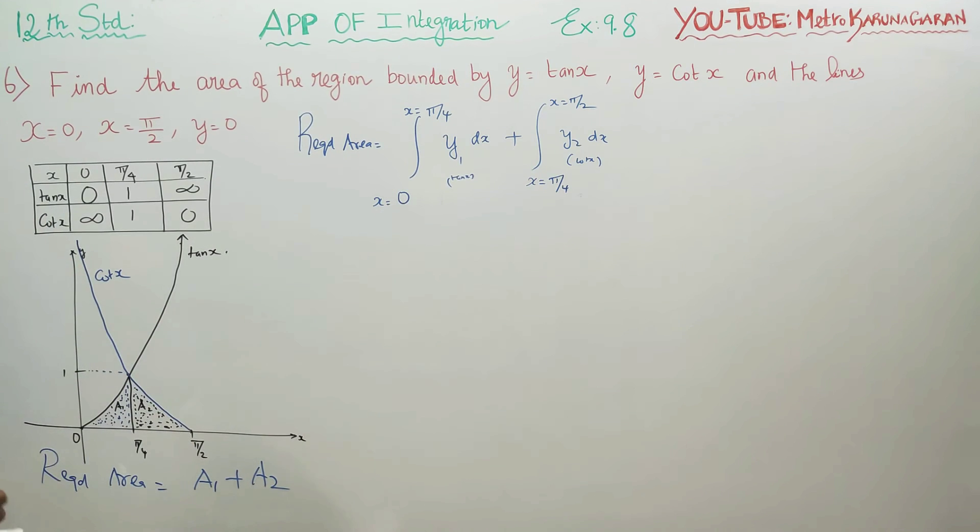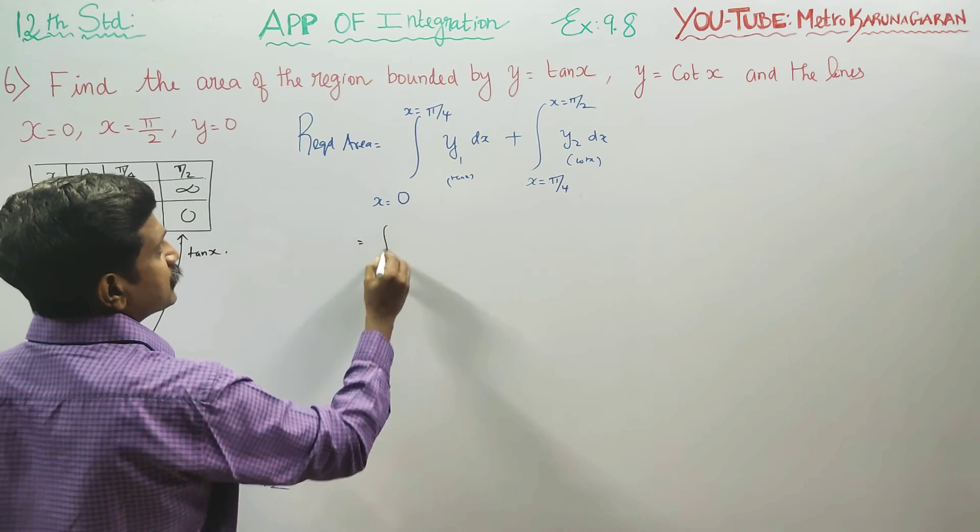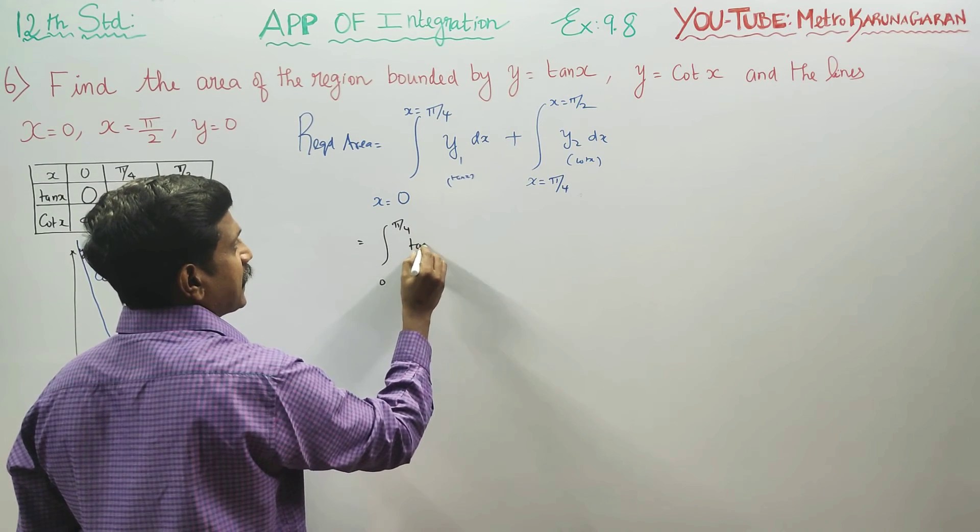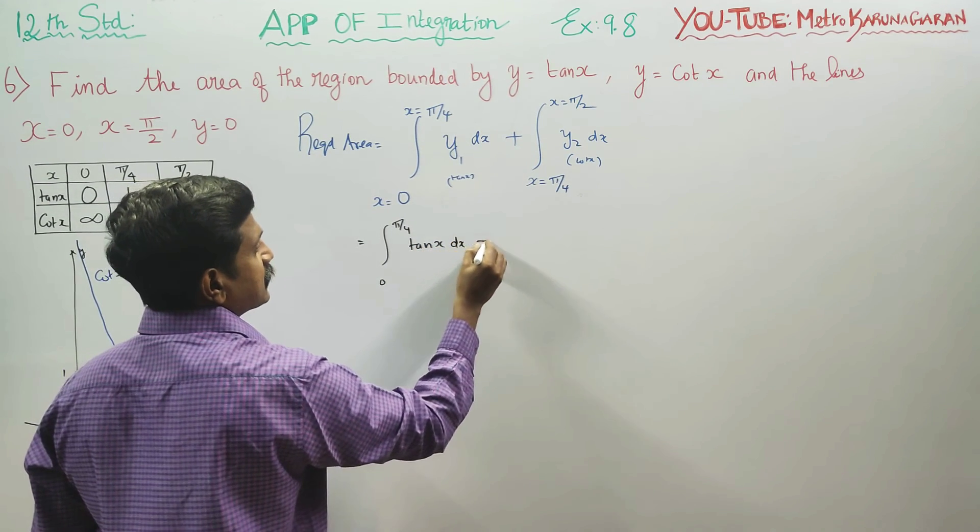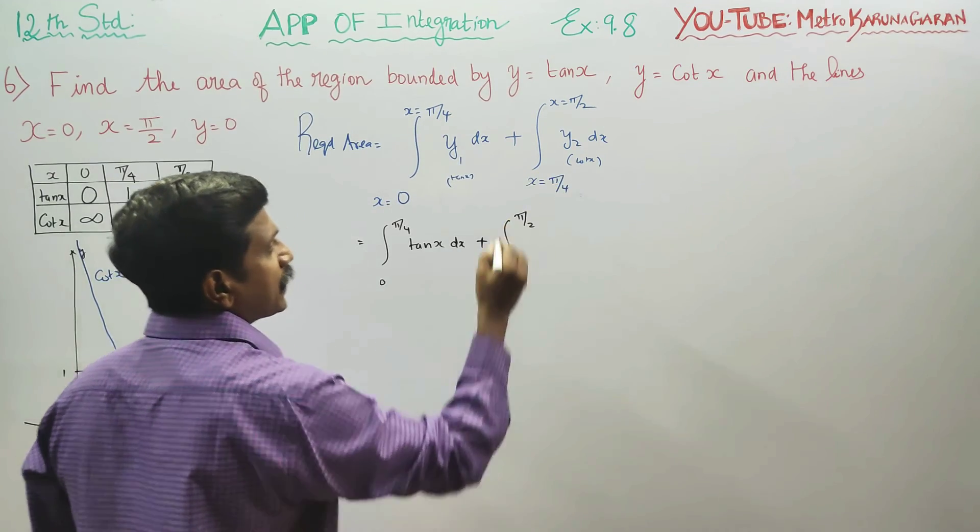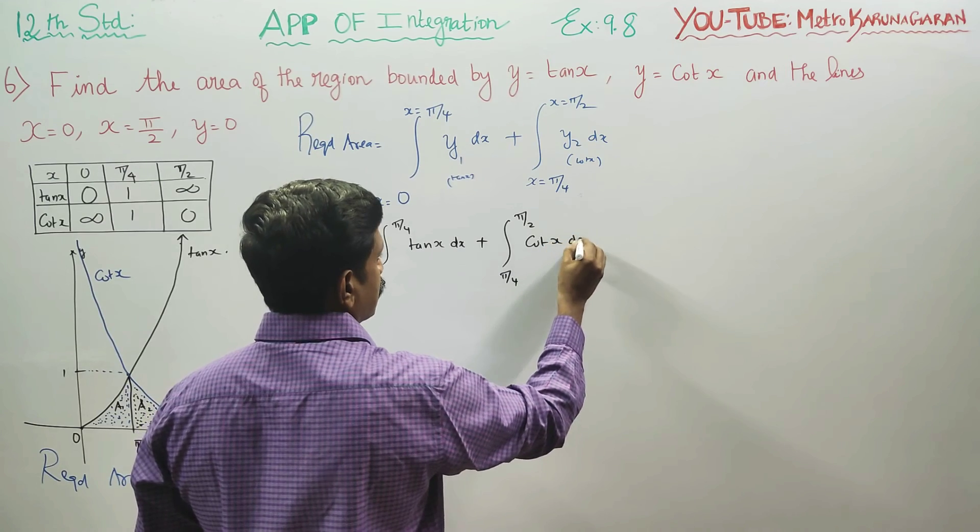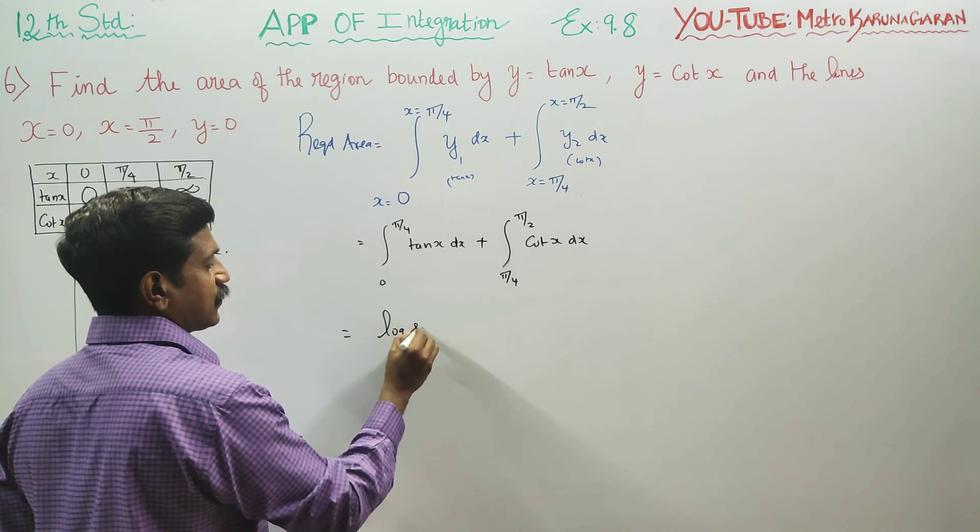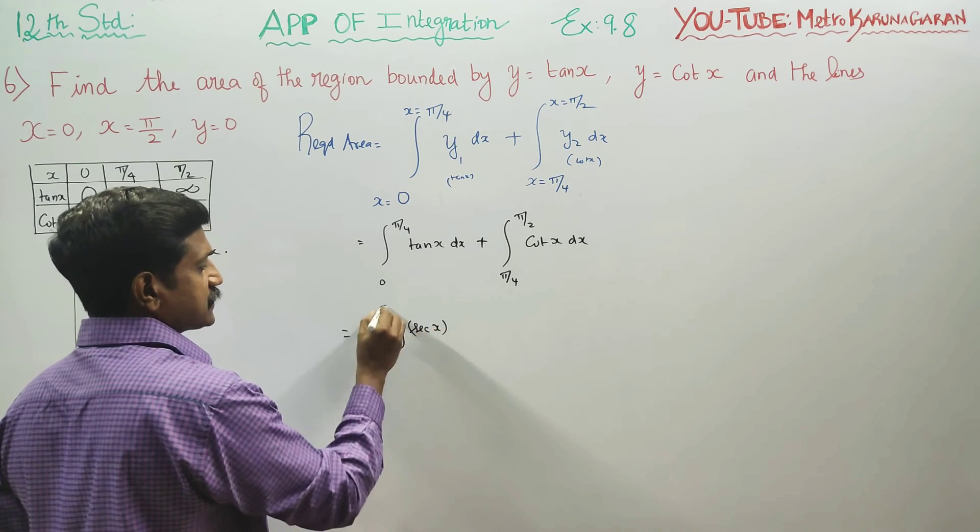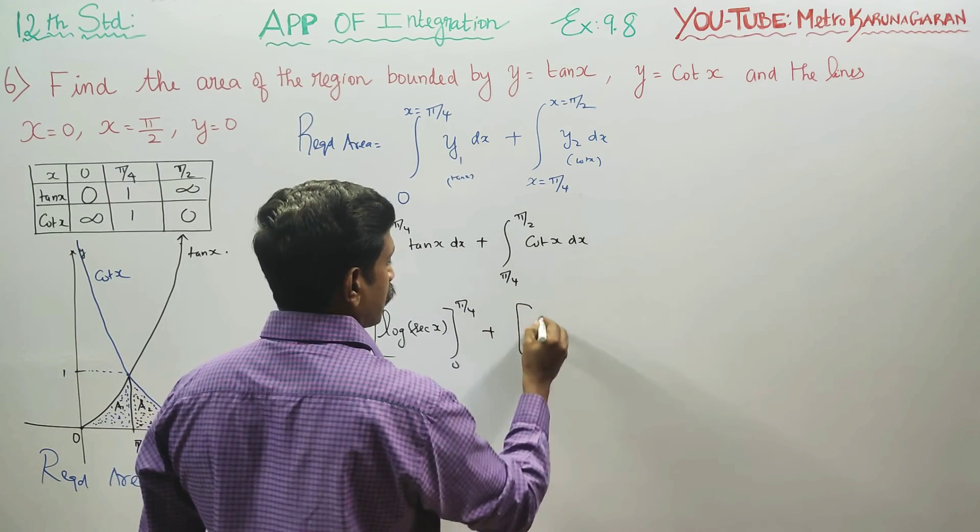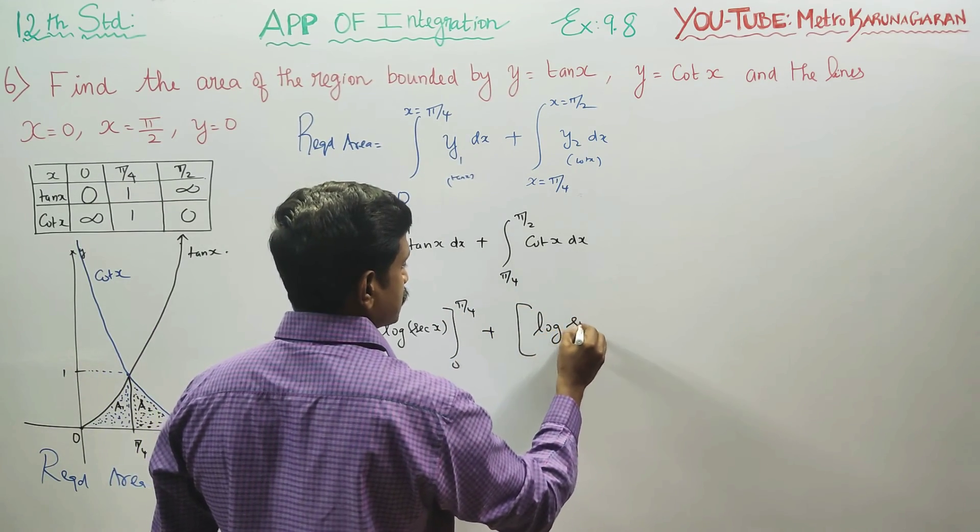Coming back to my calculation, 0 to pi by 4, y1 is tan x dx, then pi by 4 to pi by 2, y2 is cot x dx. Tan integration is logarithm of secant x. Cot x integration is logarithm of sin x.